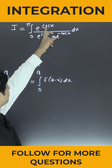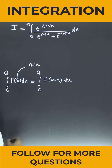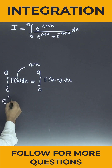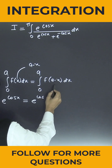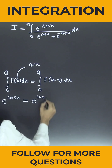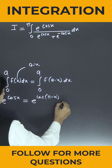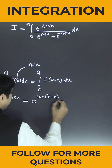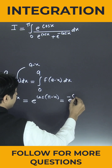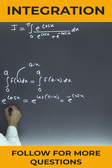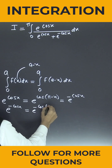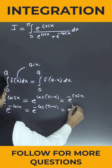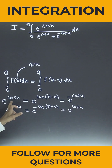Now we have either e^(cos x) or e^(-cos x). So e^(cos x) can be written as e^(cos(π - x)). Now what is cos(180 minus x)? It will be negative. So this is e^(-cos x). And e^(-cos x) is nothing but e^(-cos(π - x)), which is e^(cos x). So we replace e^(cos x) by e^(-cos x).